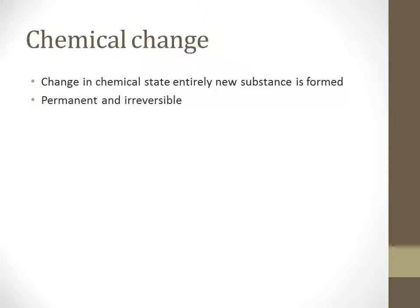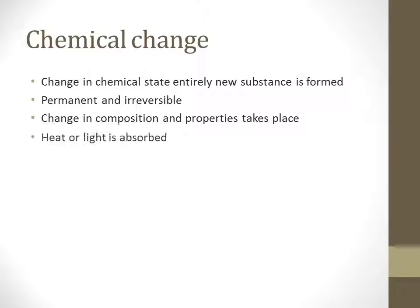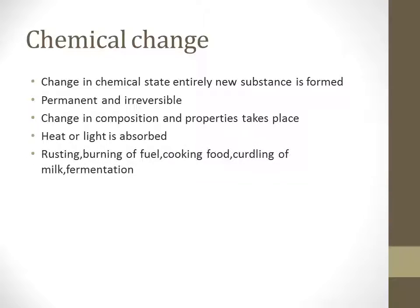A chemical change is permanent and irreversible. The change takes place in the properties and composition. Heat or light is absorbed in a chemical change. Examples of chemical changes include rusting, burning of fuel, cooking of food, curdling of milk, and fermentation.